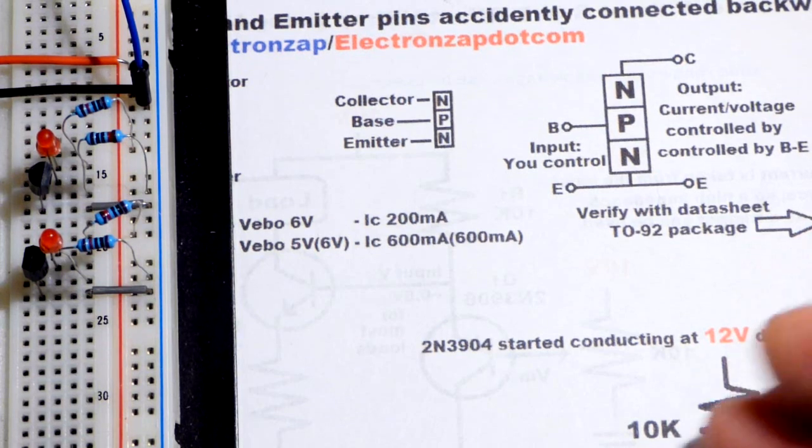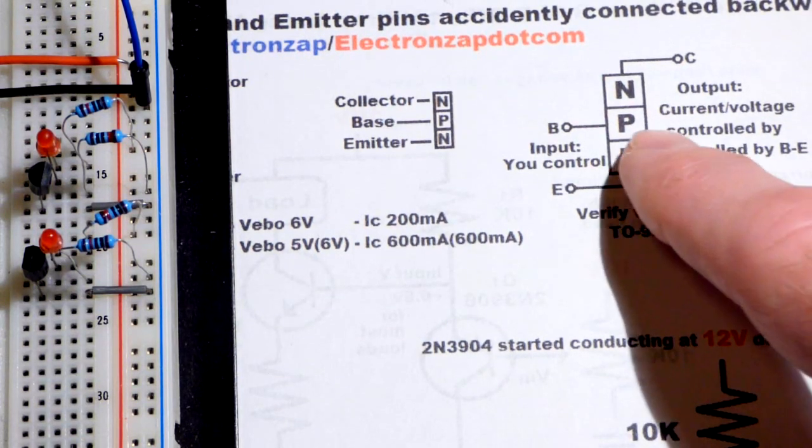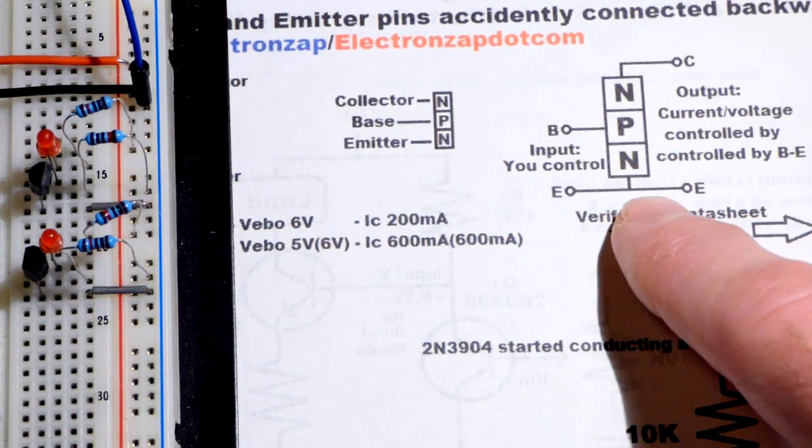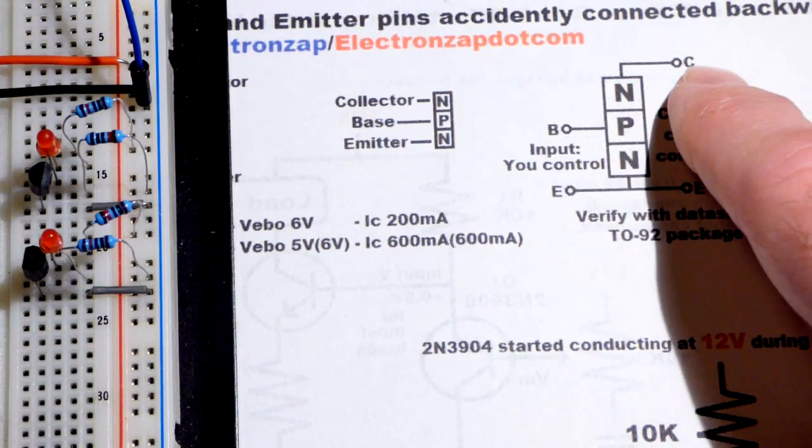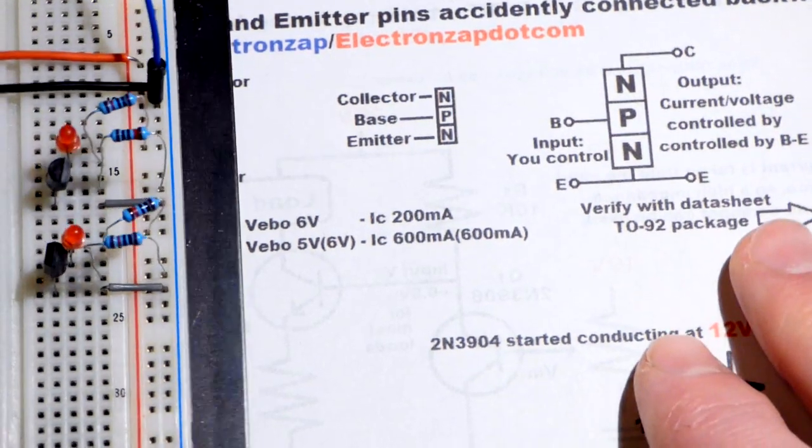But you still want to avoid that because the properties of the base-to-emitter differ from the collector-to-emitter.